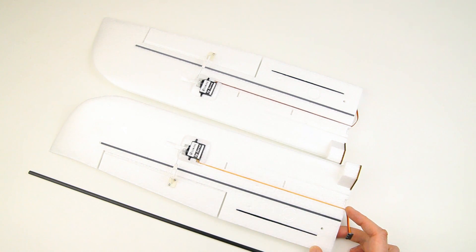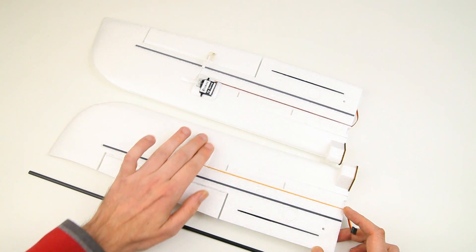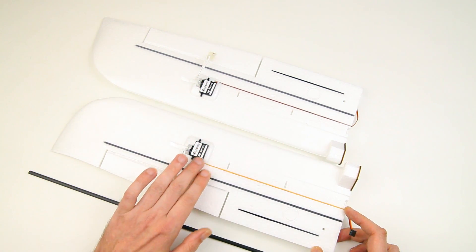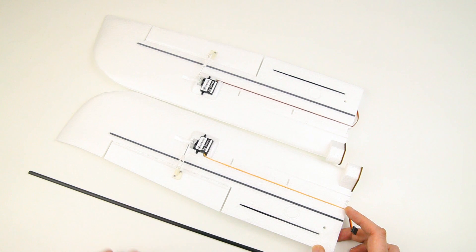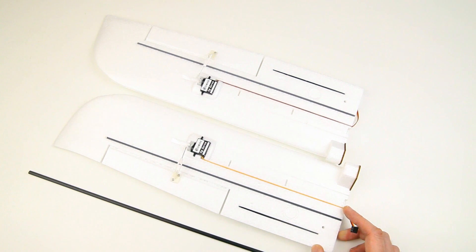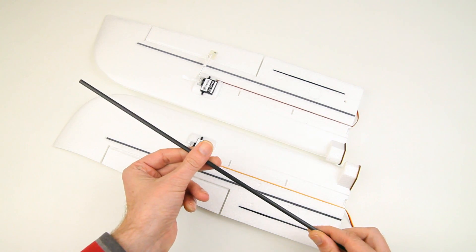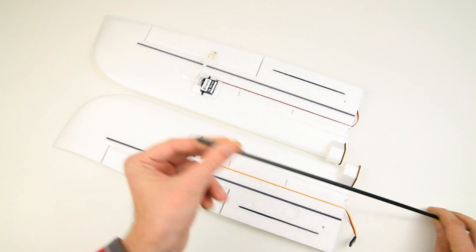Servos are already installed. They do stick out a little from the wing, that's a bit unfortunate. And control horn and control rod are already installed as well.